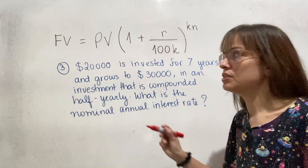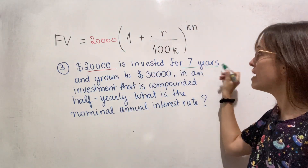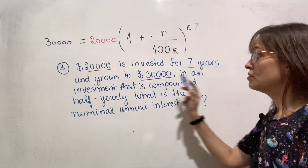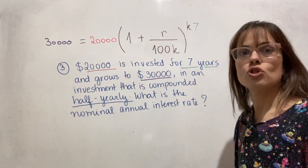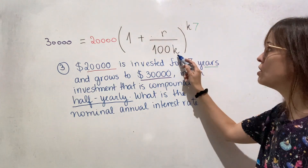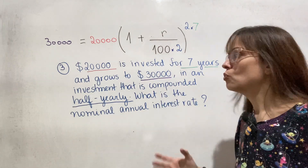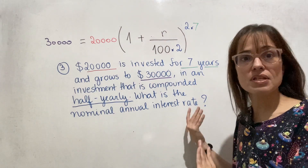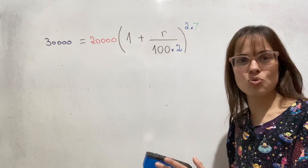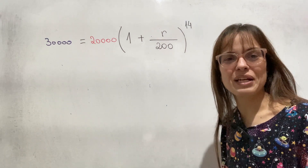We have 20,000 invested, so PV is 20,000. It's invested for seven years, so N is seven. After seven years the money grows to $30,000, so 30,000 is the future value. The investment is compounded half-yearly, so K is two because there are two halves in a year. Now we have an equation where everything is a number except for R, the nominal annual interest rate. There are a couple more steps to solve it.